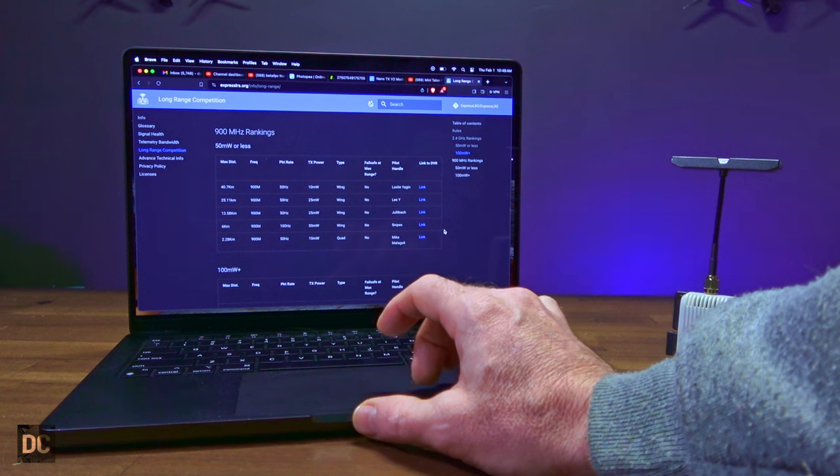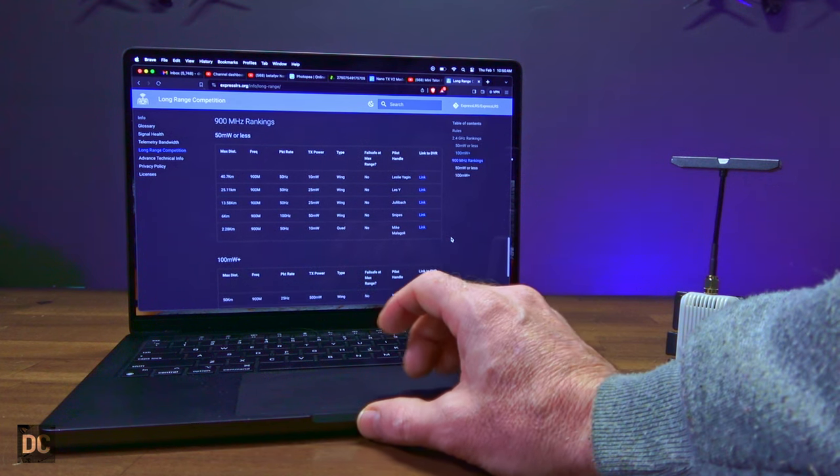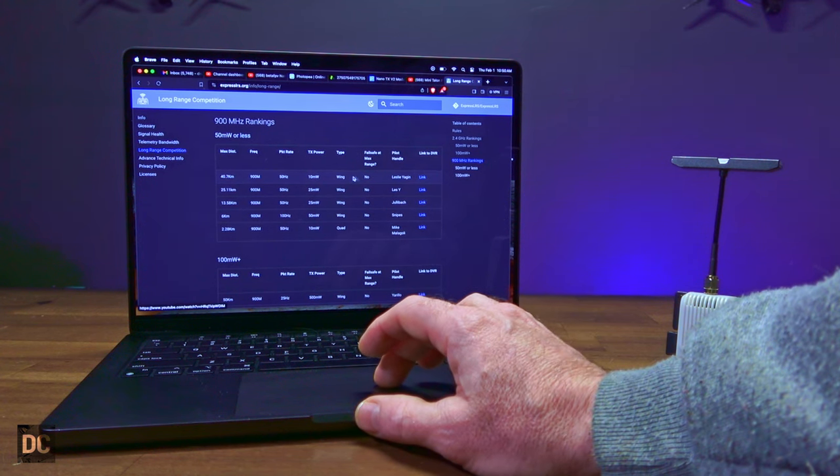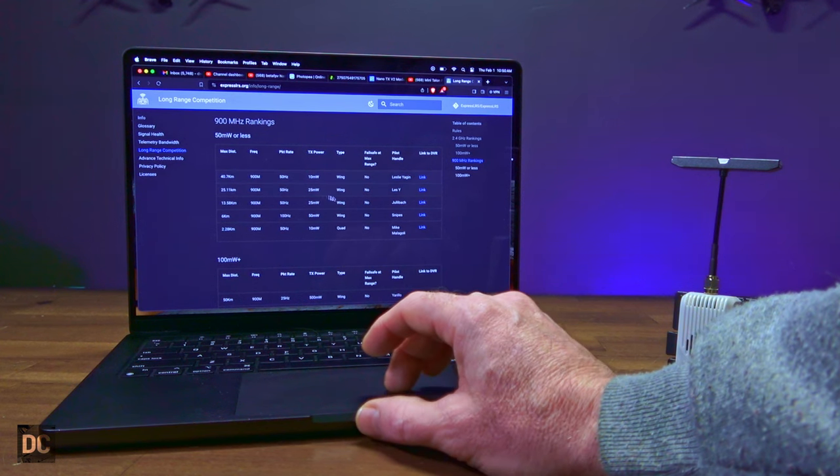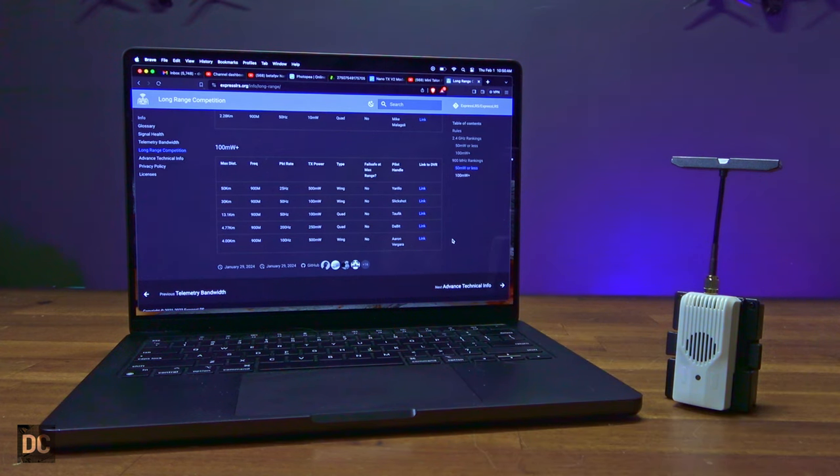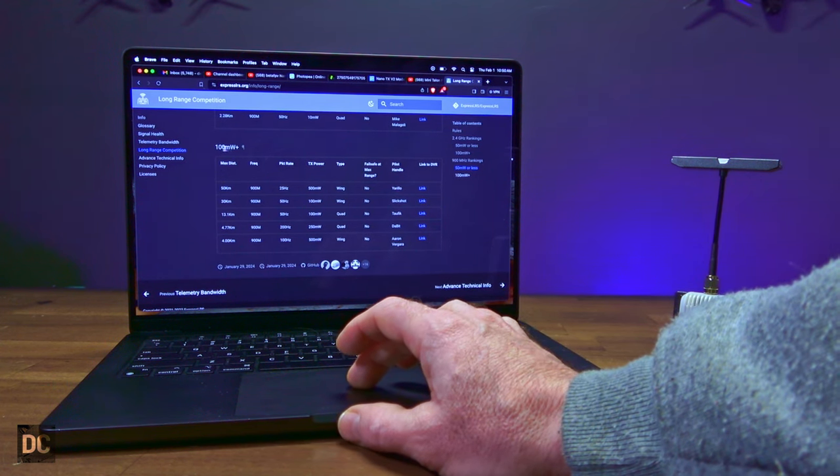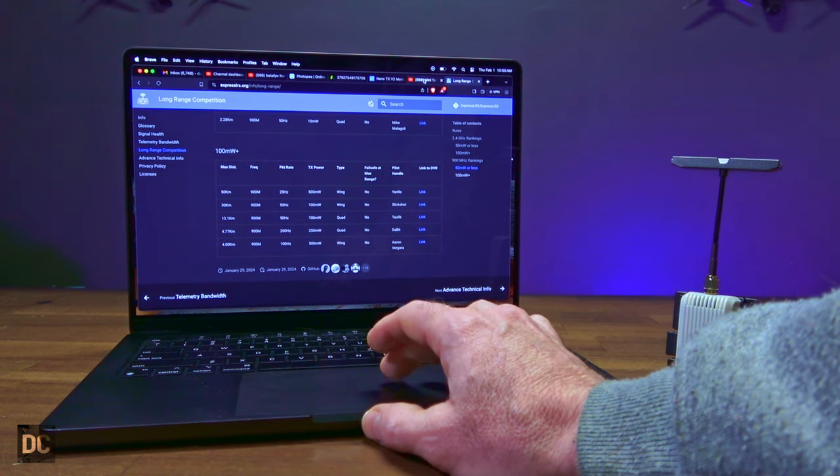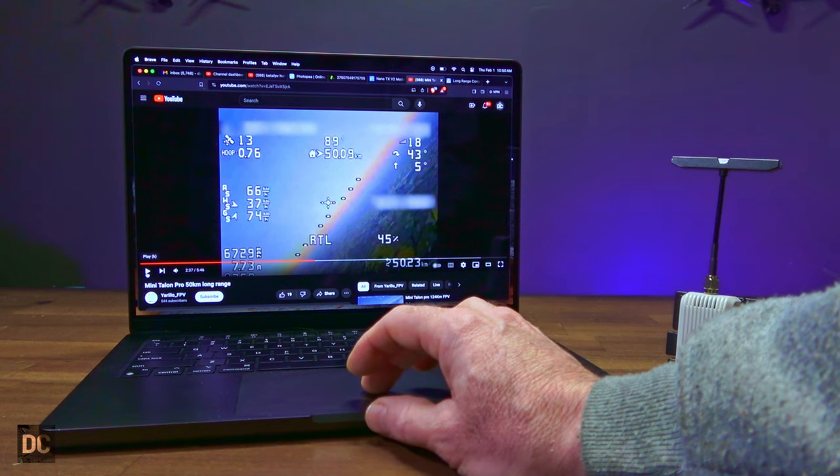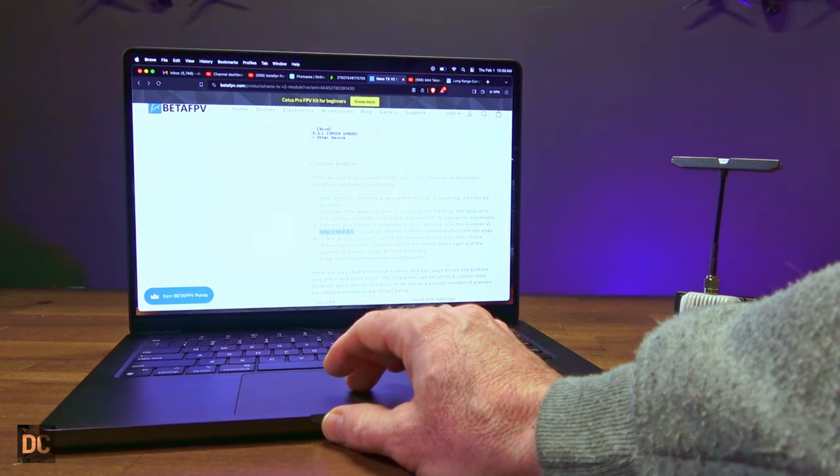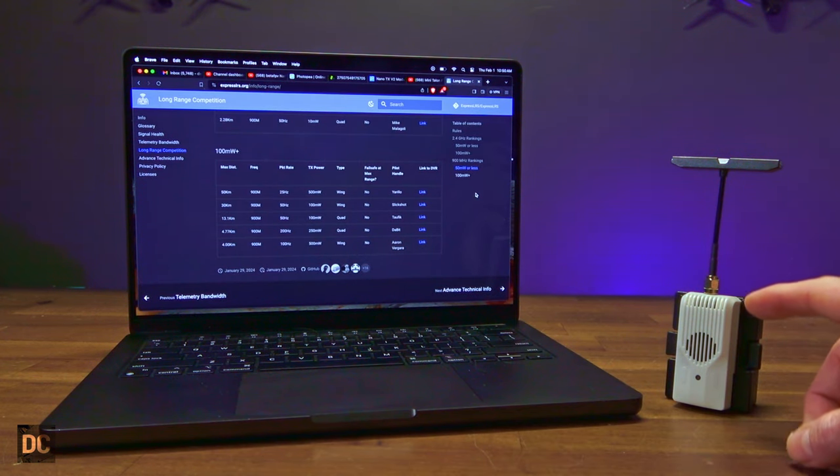However, if you scroll down to the 900 megahertz rankings, we have 50 milliwatt or less right there at 40 kilometers. Leslie Yagen did out to 40.7 kilometers. That's pretty impressive. And a little further down, we also have 50 kilometers plus in the 100 milliwatt section on the 915. So let's go ahead and link over to his video. And this is his mini Talon flying ELRS on 915 at 50 kilometers out. And he is only running half of the capability of this particular transmitter.